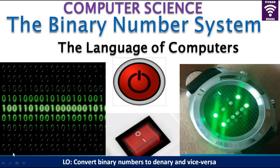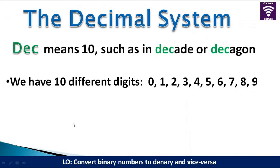It is important for us to understand how binary systems work. But first, we are going to be looking at the decimal system. The word dec means 10. When we are counting in years, decade refers to a period of 10 years. And decagon in mathematics is a shape with 10 sides.